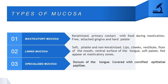The oral mucosa has been categorized as masticatory, lining, and specialized mucosa. Masticatory mucosa appears at the hard palate area and attached and free gingival locations where food has direct contact with the mucosa, and it is keratinized. Lining mucosa appears at limiting structure locations like the soft palate, cheek, lip, vestibule, and floor of the mouth, and shows no keratinization. Specialized mucosa appears on the dorsum of the tongue.